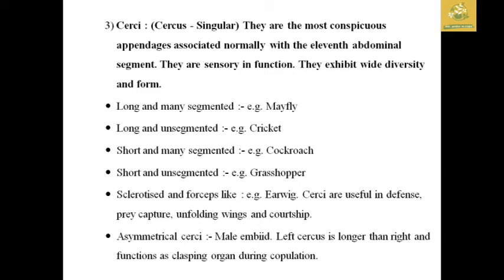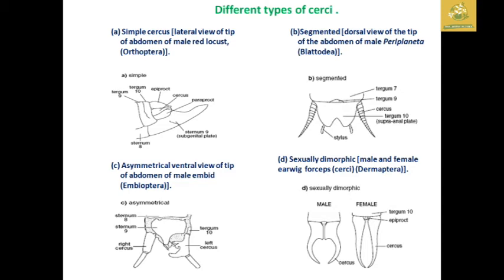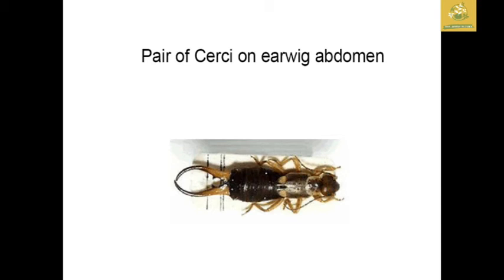Asymmetrical cerci are found in male Embioptera — the left cercus is longer than the right and functions as a clasping organ during copulation. I have given images of the different types of cerci: simple cerci in the male Reticulitermes, segmented cerci in the abdomen of male Periplaneta, asymmetrical cerci in male Embioptera, and sexually dimorphic forcep cerci in Dermaptera (earwigs), where the male has shorter cerci and the female has longer, curved cerci.